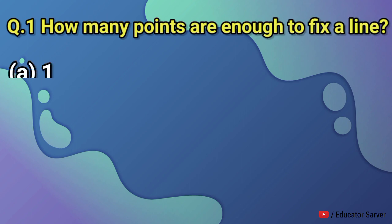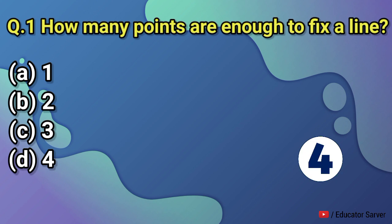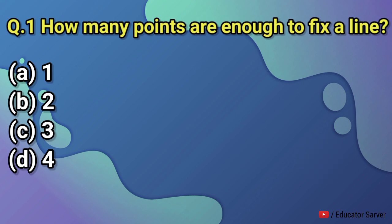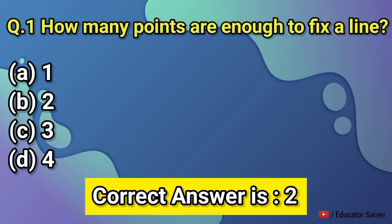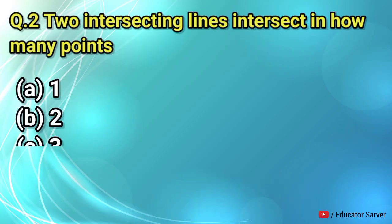Question number one: how many points are enough to fix a line? Options are one, two, three, and four. The right answer is two.